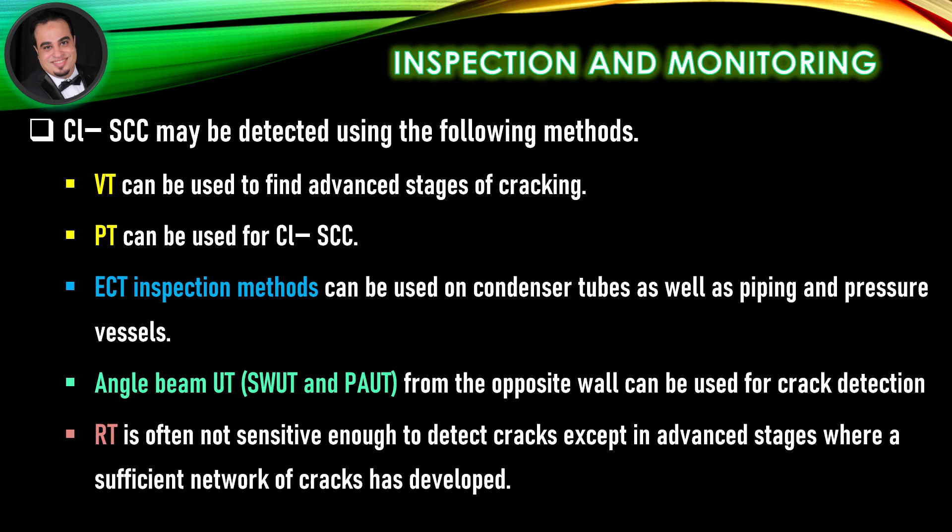Chloride stress corrosion cracking may be detected using the following methods: VT can be used to find advanced stages of cracking. PT can be used for chloride stress corrosion cracking. ECT inspection methods can be used on condenser tubes as well as piping and pressure vessels. Angle beam UT, SWUT, and PAUT from the opposite wall can be used for crack detection. RT is often not sensitive enough to detect cracks except in advanced stages where a sufficient network of cracks has developed.